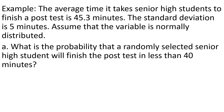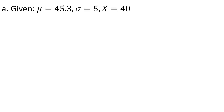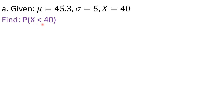Let us solve first for letter A, which asks for the probability that a randomly selected senior high student will finish the post-test in less than 40 minutes. The given values are: mean = 45.3, standard deviation = 5, and x = 40 minutes. We are asked to solve for the probability that x is less than 40.